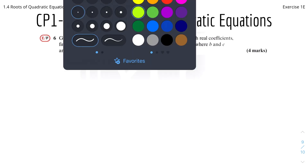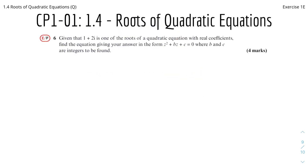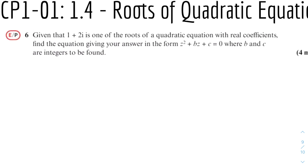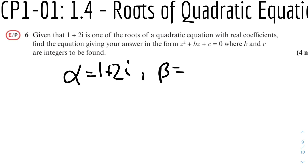Question 6, the third question. Given that 1 plus 2i is one of the roots for a quadratic equation with real coefficients, find the equation giving your answer in the form z squared plus bz plus c equals 0 where the coefficients are all integers. Let alpha be 1 plus 2i. That means beta, the other root, will be the complex conjugate of alpha, which is 1 minus 2i.